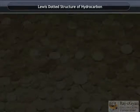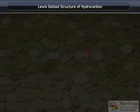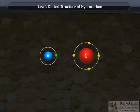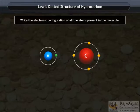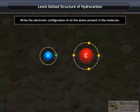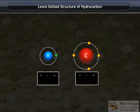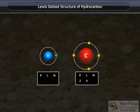Lewis dotted structure of hydrocarbon. Let us draw the Lewis dotted structure of ethane. Let us now follow the steps. Write the electronic configuration of all the atoms present in the molecule. Carbon has 2, 4 and hydrogen has 1.